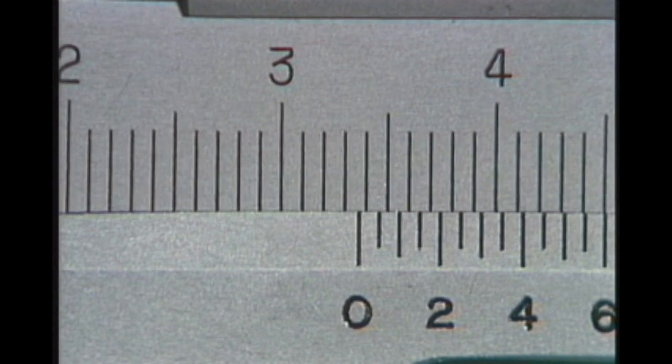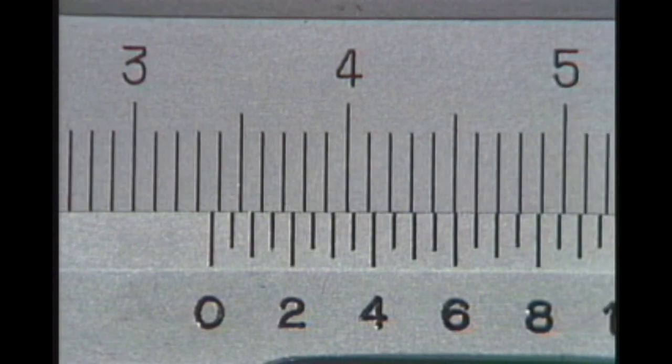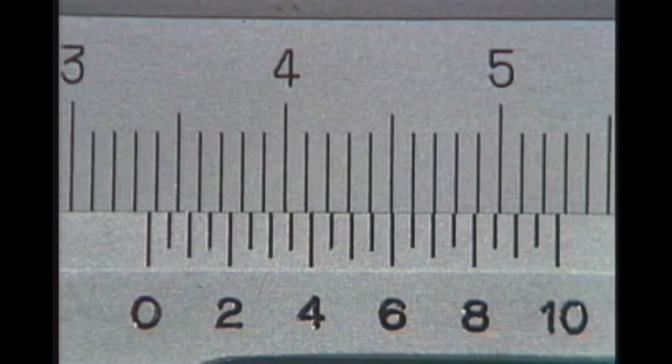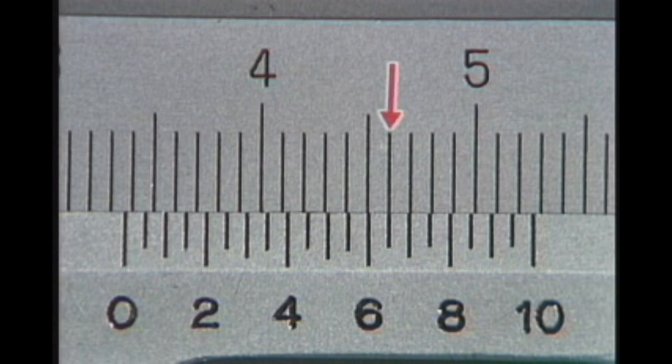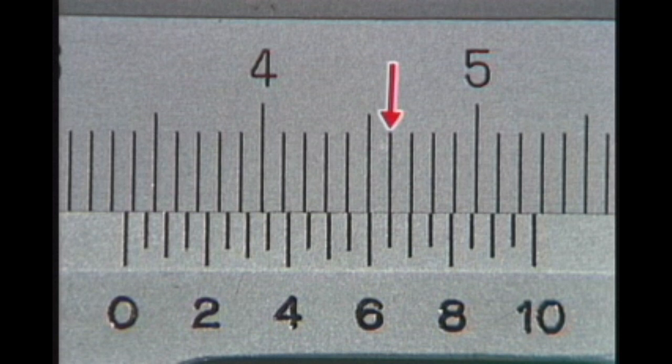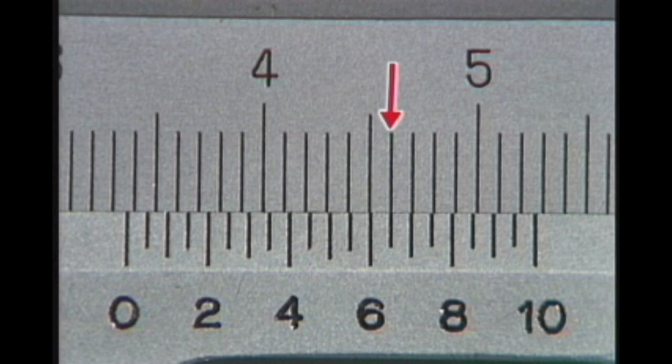Next, find a graduation on the vernier that is exactly aligned with the graduation on the caliper body. Here, the 6.5 graduation is exactly aligned. This means that the measurement is 33 millimeters plus 6.5 tenths, or 65 one hundredths.